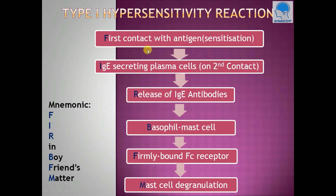We can remember all these steps of type 1 hypersensitivity reaction in their proper sequence by using a simple mnemonic: 'FIR IN BOYFRIENDS MATTER.' Here F stands for first contact with antigen, that is sensitization, and I stands for IgE-secreting plasma cell, secreted on the second contact with the same antigen. R stands for release of IgE antibodies, B stands for basophil/mast cell.